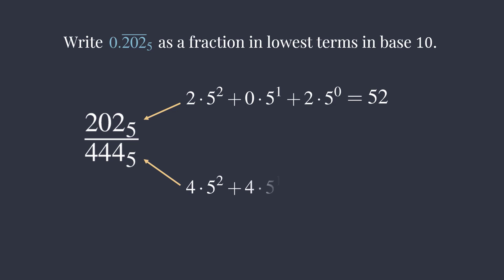Doing the same thing for the denominator, 444 base 5, we get 124. Simplifying the fraction, we get 13 over 31.